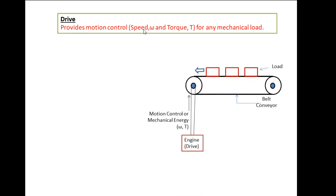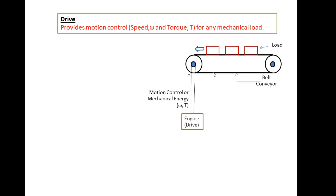This belt conveyor system is provided with mechanical energy, and loads are placed on its surface. The objective of this belt conveyor is to move the load from one end to the other. Here, a mechanical drive, engine, or prime mover provides motion control in terms of speed and torque to this belt conveyor, enabling it to move the load.